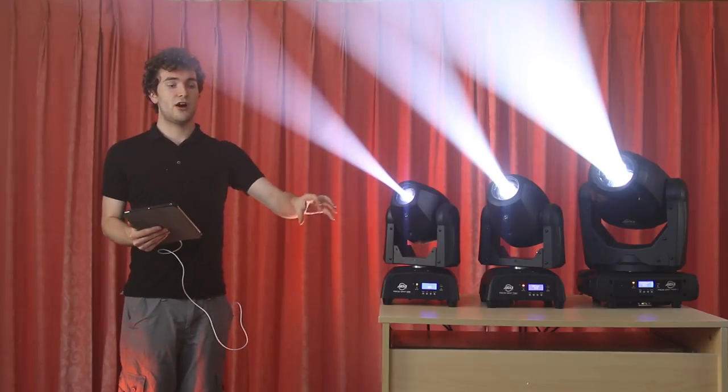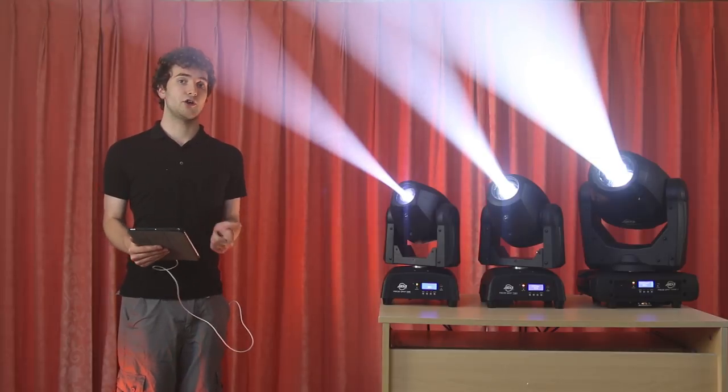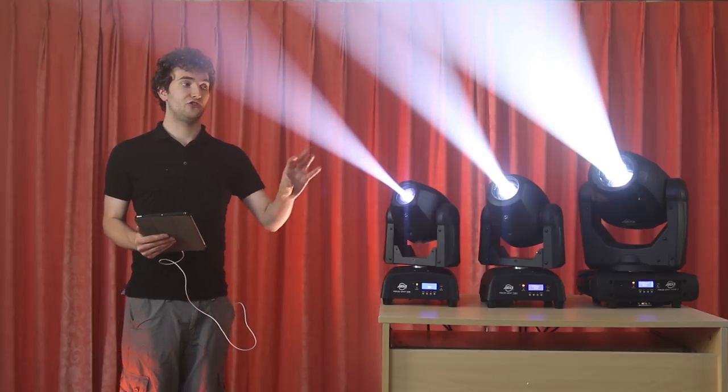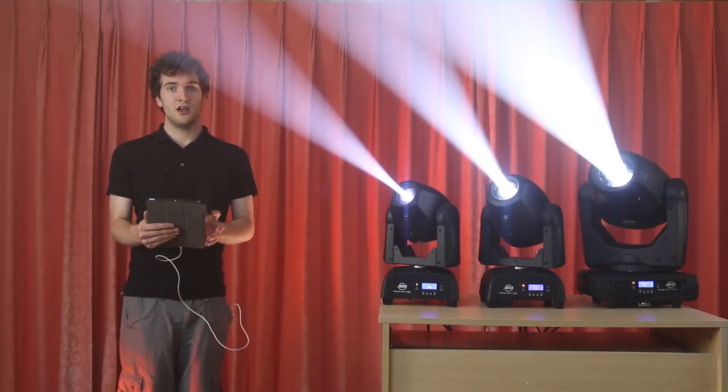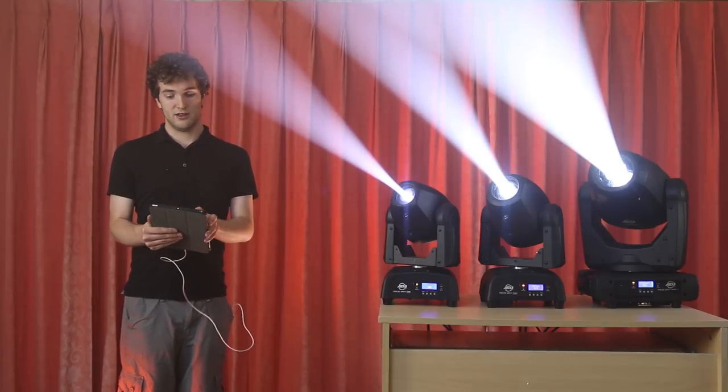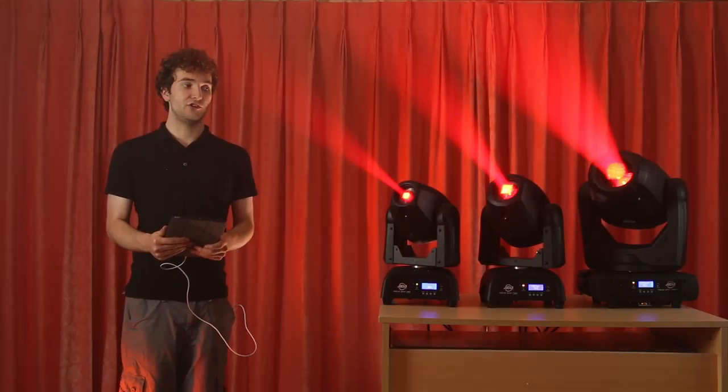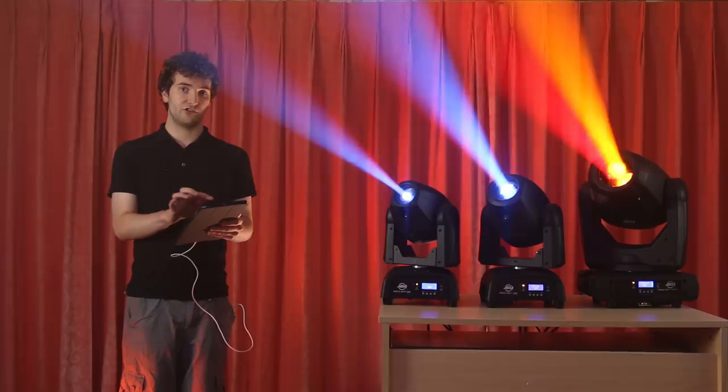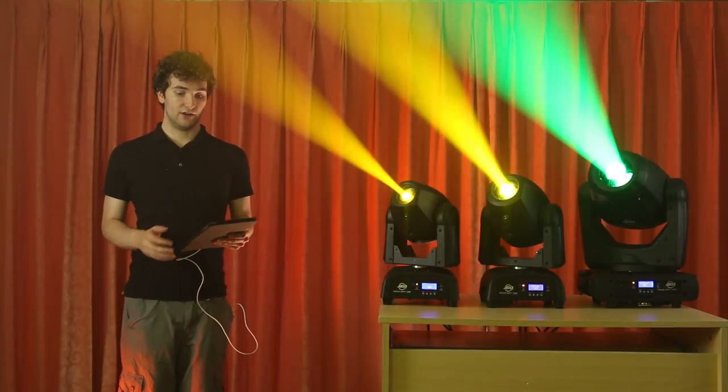Now, in terms of the features inside, the FocusBot 1 is of course the most basic. It's only got a colour wheel and a gobo wheel, whereas the FocusBot 2 and 3 have got other toys inside. So starting off with colours, there are differences between the three units. I'm going to scroll through each wheel of the eight colours inside each light. You'll see the FocusBot 1 and 2 remain mostly the same. However, the FocusBot 3 has an entirely different colour wheel inside.